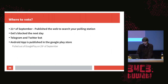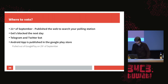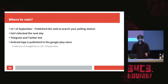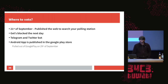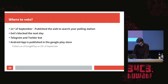This homepage was published on the 21st of September and got blocked the next day — so the assumption was correct. Telegram and Twitter bots were also published where you could send your information and they'd tell you which polling station to go to, and also an Android app in the Google Play Store. This app was pulled on the 29th of September.